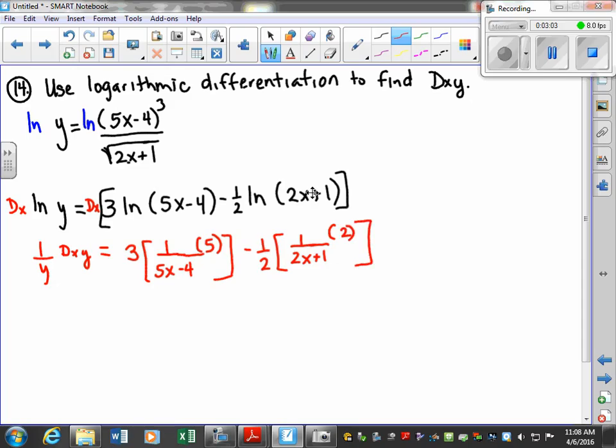So now we're going to work on simplifying this. We're just going to leave this side alone and focus on simplifying the right-hand side. We'll come back to this side in just a minute. So what's 3 times 5 in our numerator? 15 over 5x minus 4. And then what happens with this 2 and this 2? It cancels, so we'll just have minus 1 over 2x plus 1.